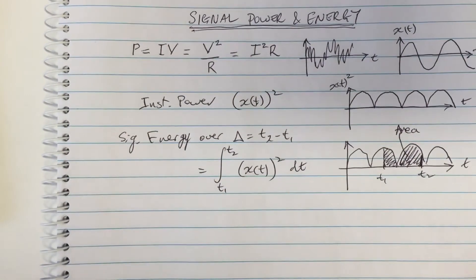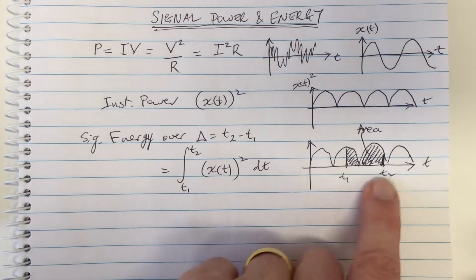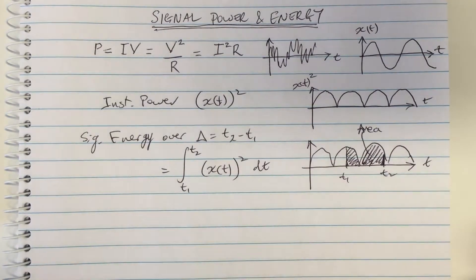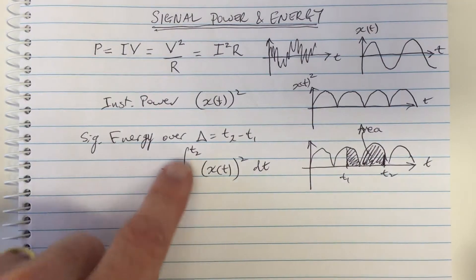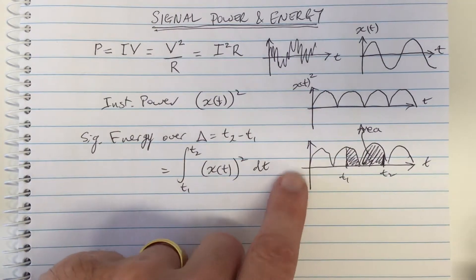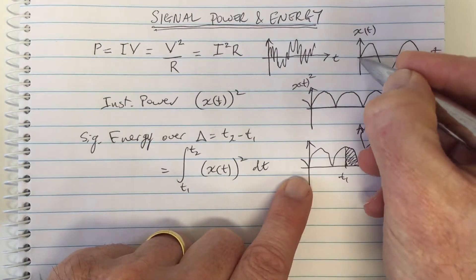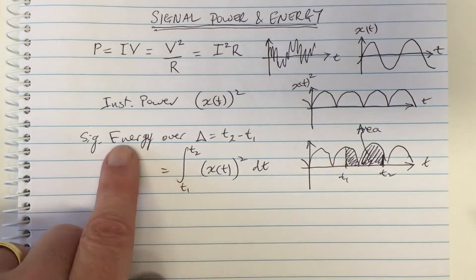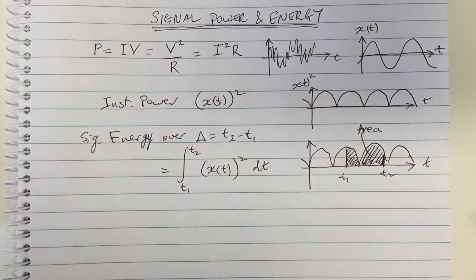Okay, so what about signals which go for a longer period of time than this? Let's say total signal energy. So the total signal energy would be exactly this expression where you just add up the area from negative infinity all the way to infinity. Okay, that's the total signal energy would be this integral from negative infinity to infinity.